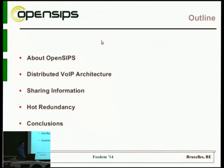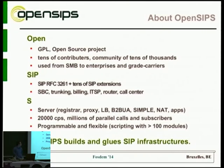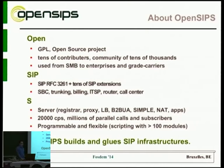So those are the issues we'll be trying to solve. OpenSIPS is an open source SIP server. It's highly programmable, flexible, and you have lots of modules to build whatever SIP infrastructure you want. It is highly scalable — it can handle up to 20,000 calls per second and millions of parallel calls, because we are a SIP server handling just the signaling part with no media flowing through OpenSIPS. You can use it for SBCs, trunking, call centers, registrations, proxies, or to glue together parts of an already-existing SIP network.